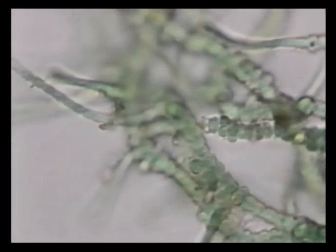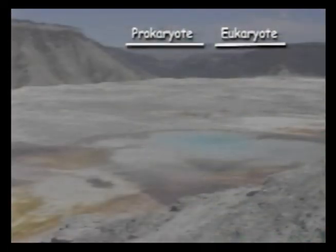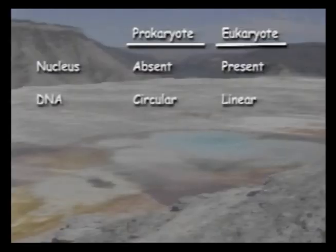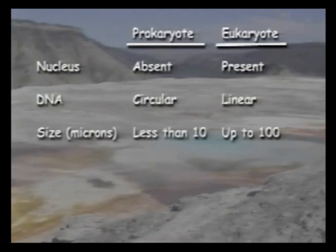The prokaryotic cells of bacteria are very different from eukaryotic cells that make up plants and animals. Prokaryotic cells do not have a nucleus. DNA molecules of prokaryotic cells are circular in structure.